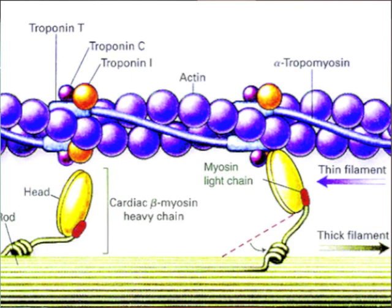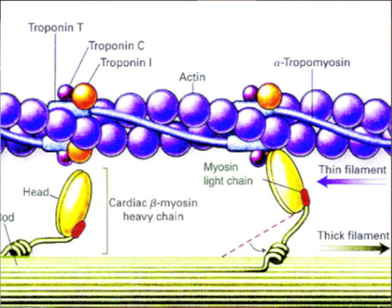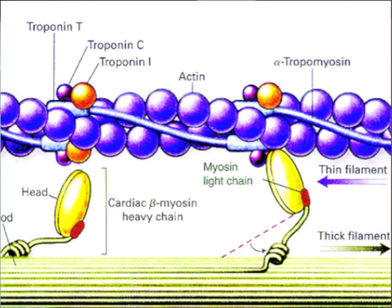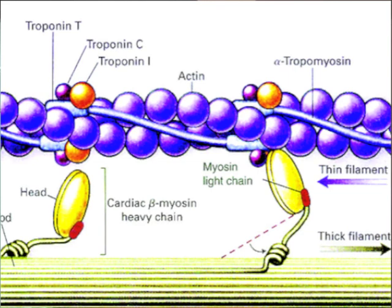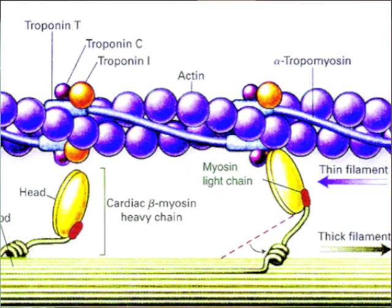This is where the sliding filament theory comes in. Tropomyosin, which is another chemical on actin, slides off the binding sites on actin. It moves off those binding sites, which makes them available for myosin — the other contractile protein — to attach to.